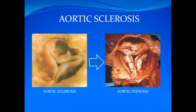Although some may consider the murmur of aortic sclerosis an unremarkable finding, in fact it represents two distinct risks. First, the rate of progression to aortic stenosis is 10% over five years. In addition, patients with aortic valve sclerosis have an increased incidence of cardiovascular complications, including coronary events, stroke, and premature death.